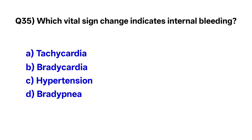Question number thirty-five: Which vital sign change indicates internal bleeding? The correct option is A, tachycardia.